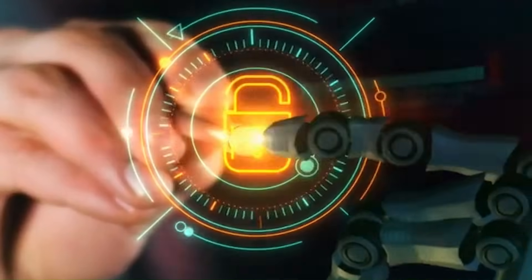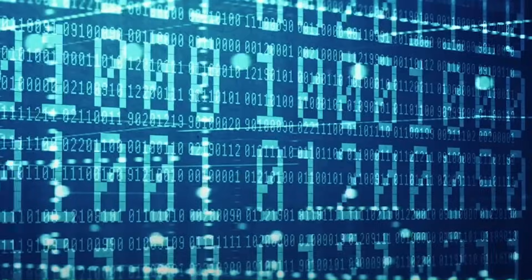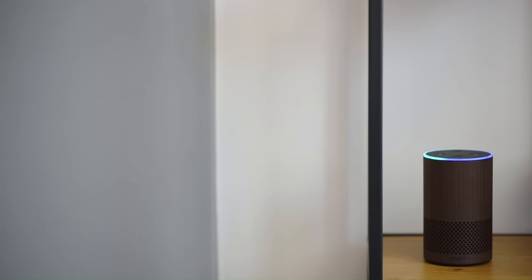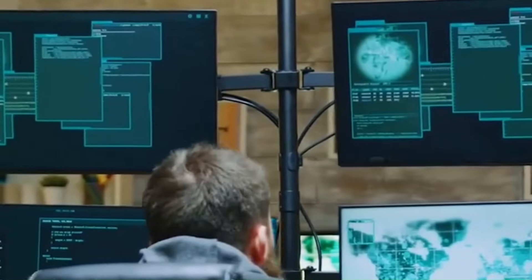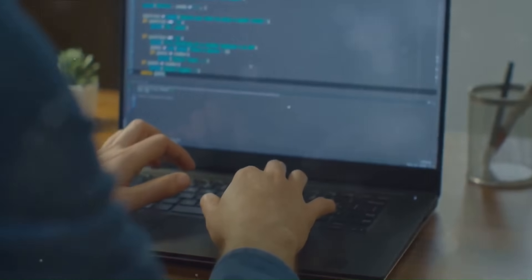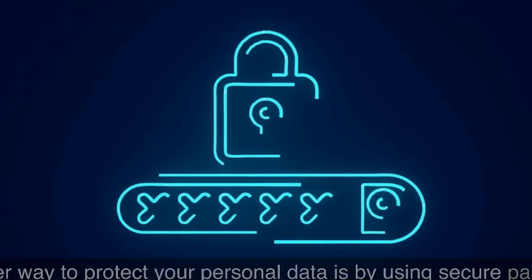AI and privacy: Are we being watched? AI systems thrive on data, personal data. From social media algorithms to smart assistants like Siri and Alexa, AI constantly collects, processes, and analyzes vast amounts of personal information. This raises serious concerns about privacy, surveillance, and data security.